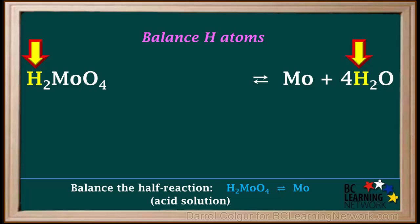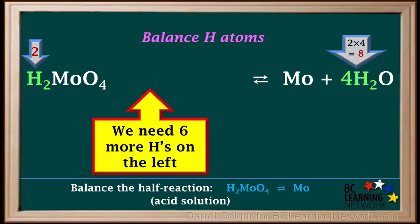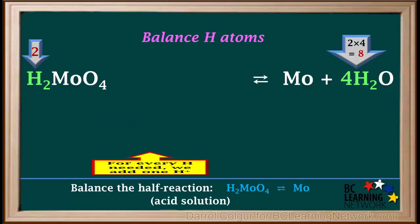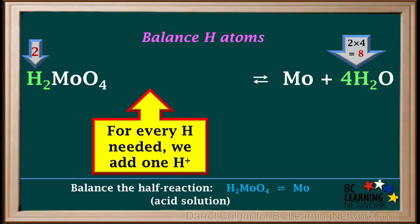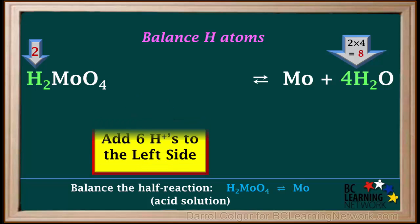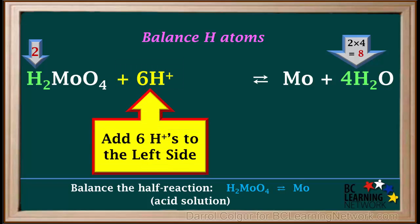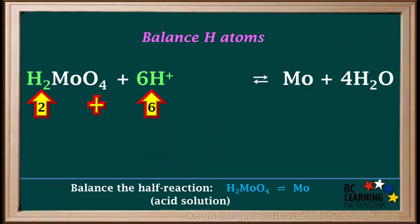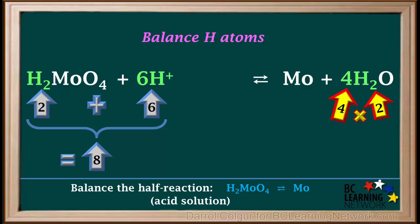The next step is to balance hydrogen atoms. We see there are two hydrogen atoms on the left and two times four, which is eight hydrogen atoms on the right. Because we have two H's on the left and eight H's on the right, we need six more H's on the left to balance hydrogens. Remember, for every H needed on the left, we add one H⁺. So we add six H⁺ to the left side. Now we have two plus six, which equals eight hydrogen atoms on the left side, and four times two, which equals eight hydrogen atoms on the right side. So hydrogens are balanced.